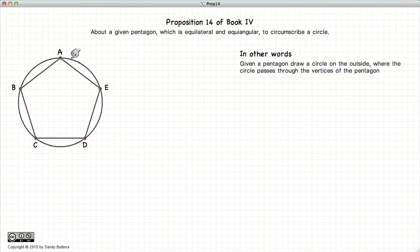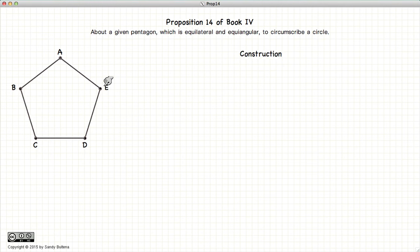In this proposition we start with the pentagon and we are going to draw a circle such that it passes through all the vertices of the pentagon. So how do we do that? Well first obviously we start with our pentagon.